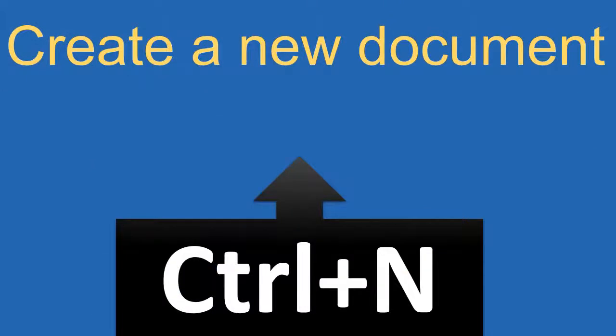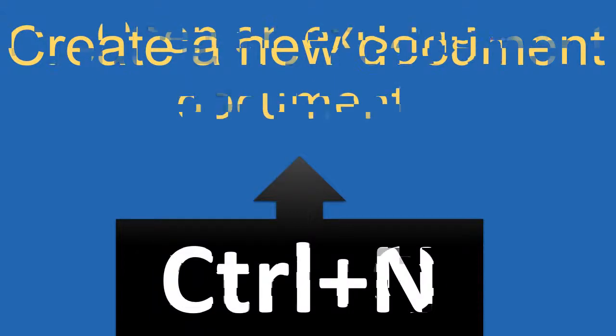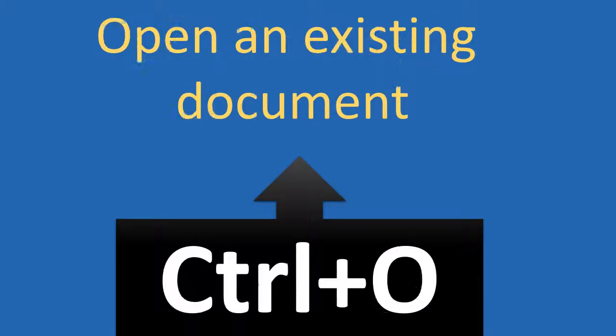CTRL plus N: used to create a new document. CTRL plus O: used to open an existing document.